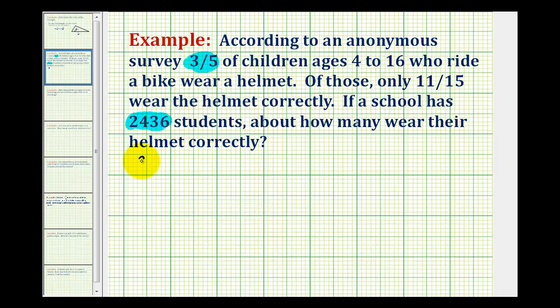So we need to find what is three-fifths of 2,436. And the word of means to multiply. So to find three-fifths of 2,436, we need to multiply three-fifths and 2,436. So we'll put 2,436 over one. Nothing's going to simplify here. So we're going to multiply the numerators and denominators together. So our numerator is going to be three times 2,436. That's going to be 7,308. And five times one is five.